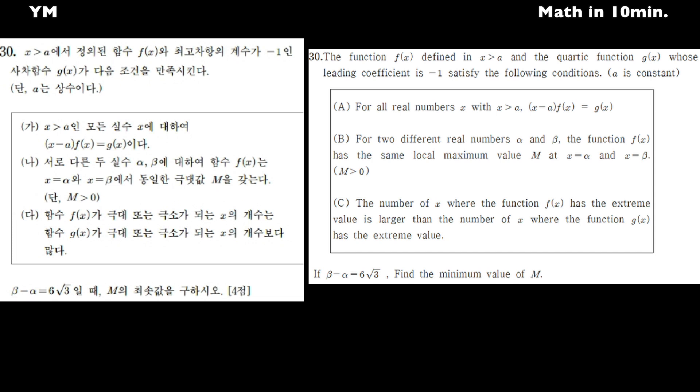The number of x where f(x) has the extreme value is larger than the number of x where g(x) has the extreme value. If β - α is 6√3, find the minimum value of M.